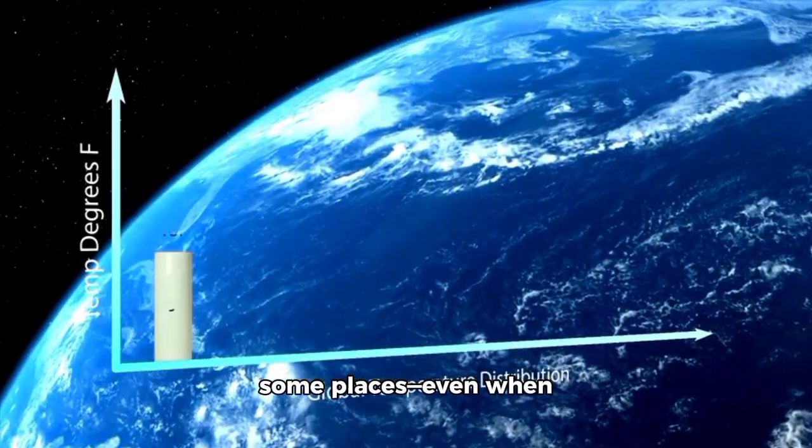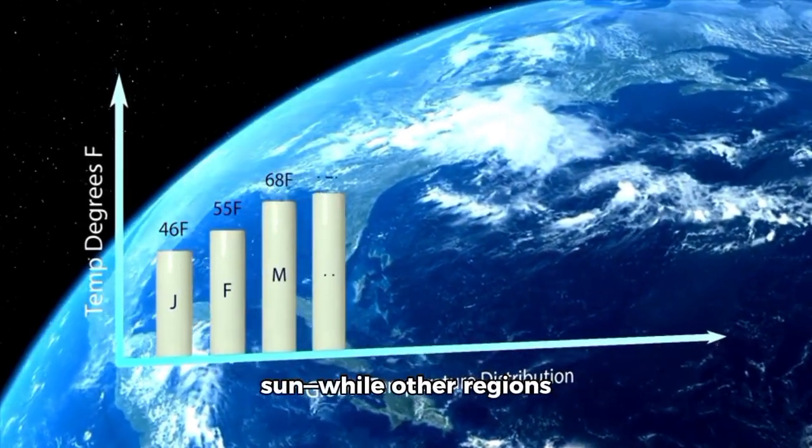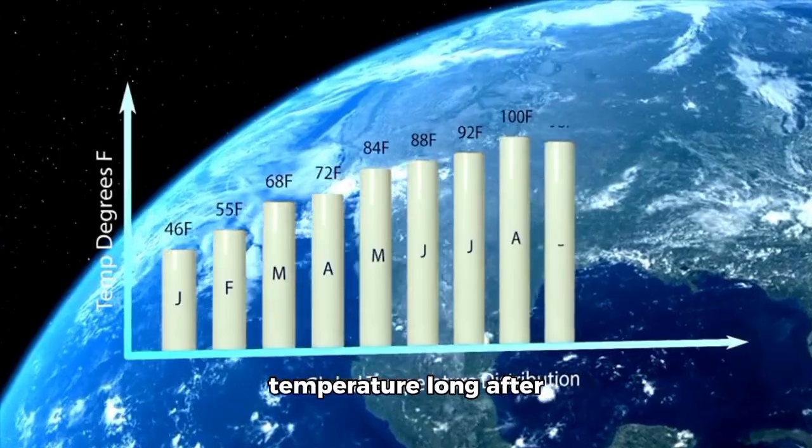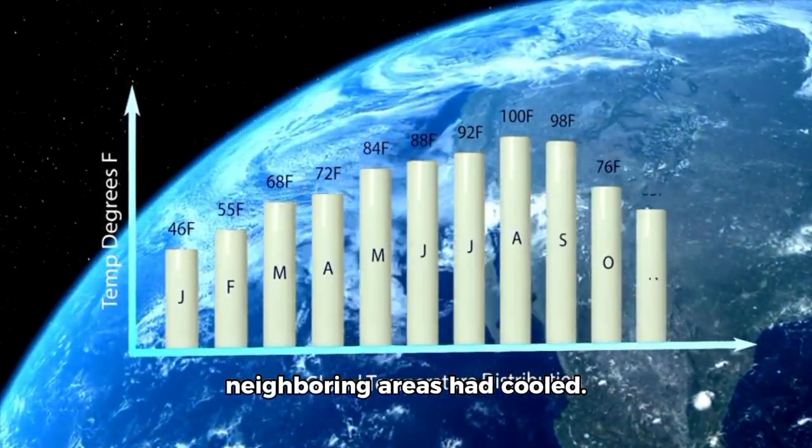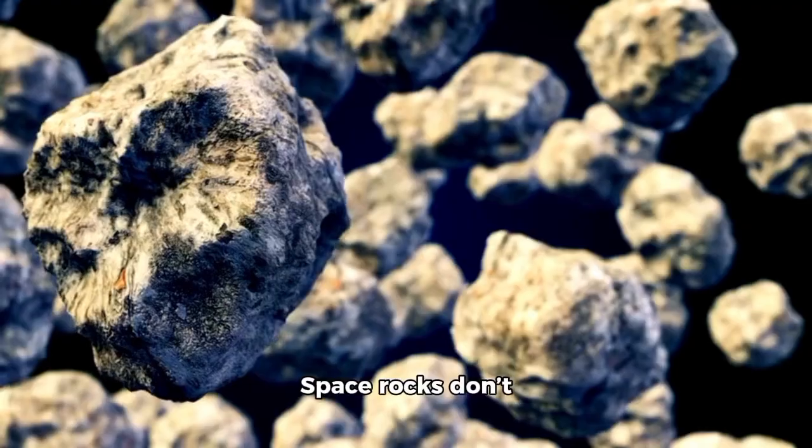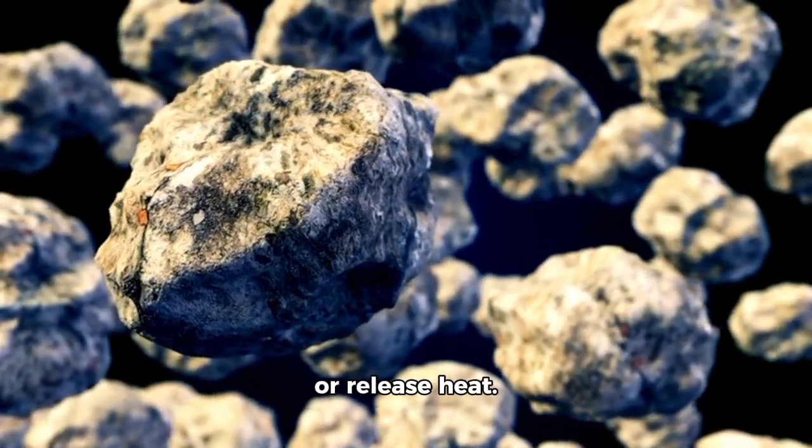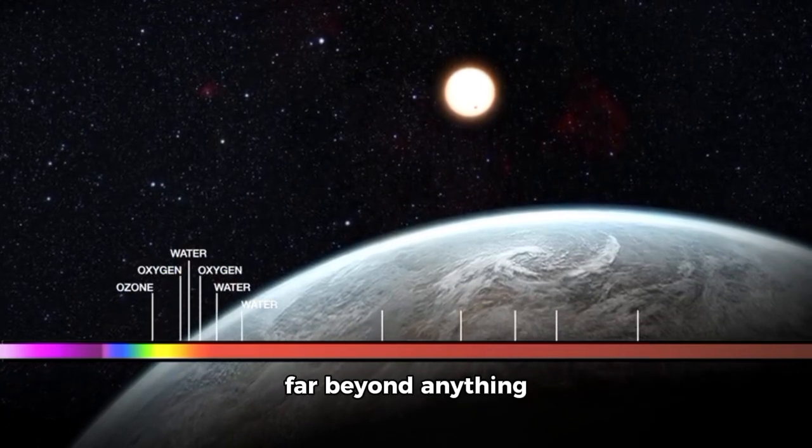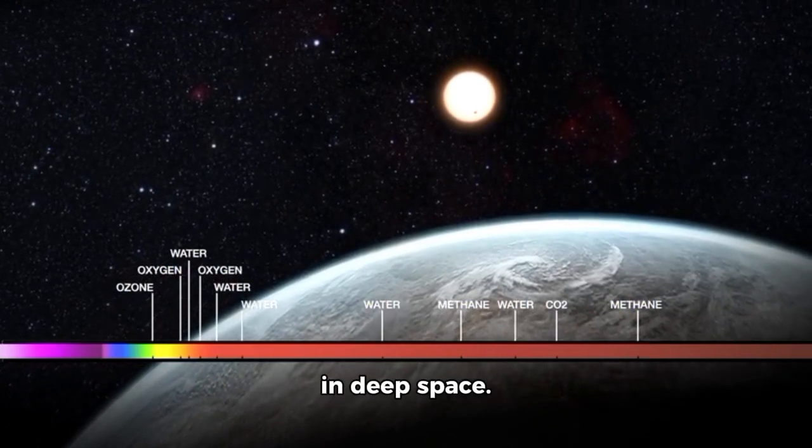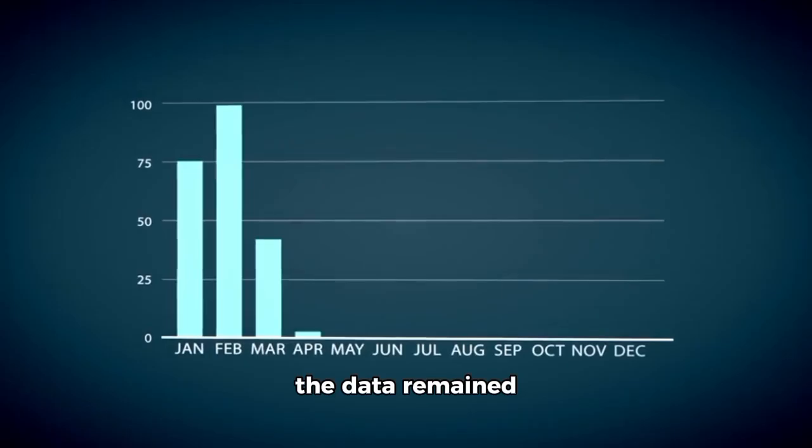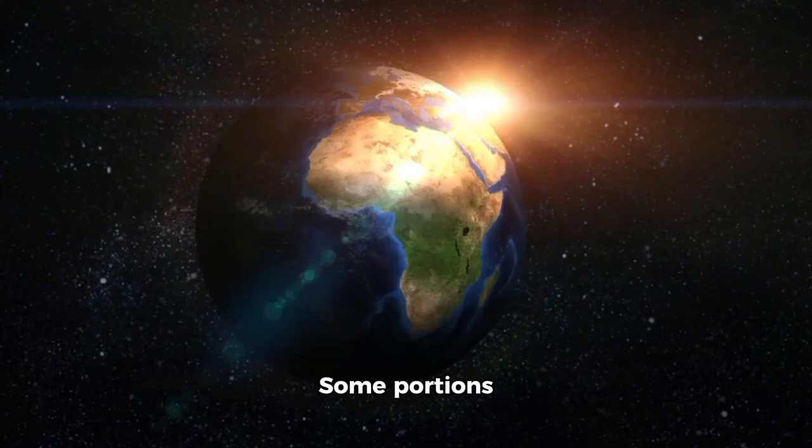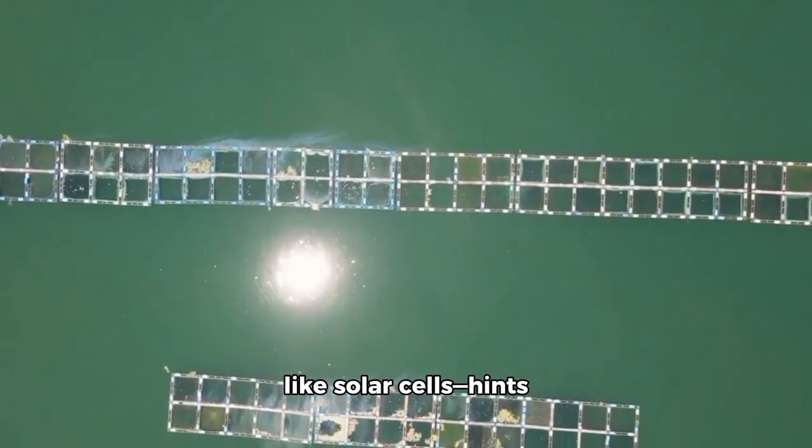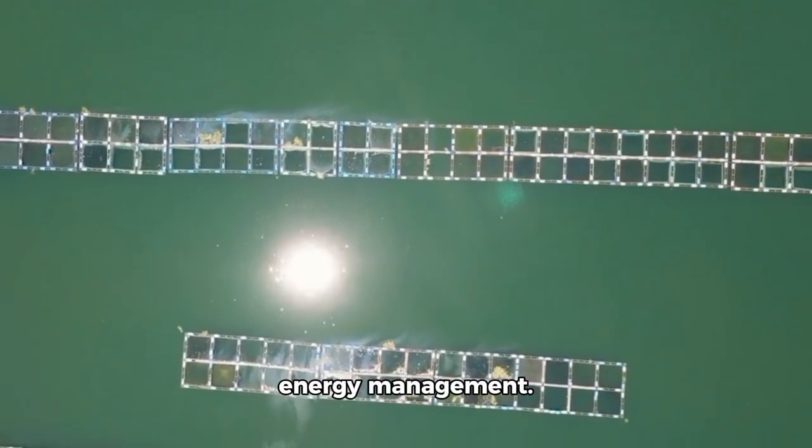3E remained cool in some places even when exposed to the sun, while other regions heated rapidly and maintained that temperature long after neighboring areas had cooled. That's not how things in nature behave. Space rocks don't choose how to absorb or release heat. This was planned thermal regulation at a level far beyond anything known to naturally occur in deep space. The data remained consistent. Some portions reflected heat like advanced insulation. Others soaked it up like solar cells, hints at onboard systems or energy management.